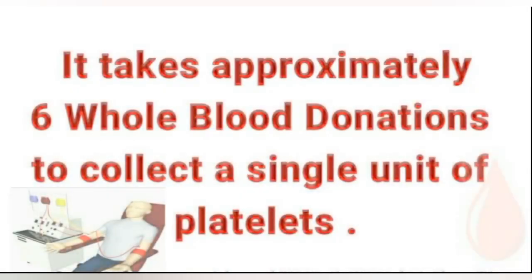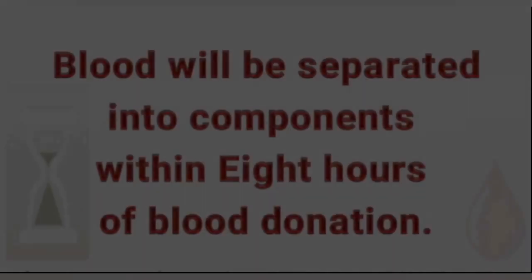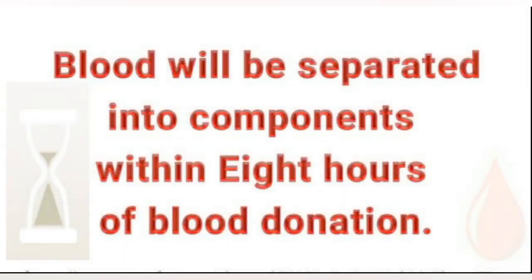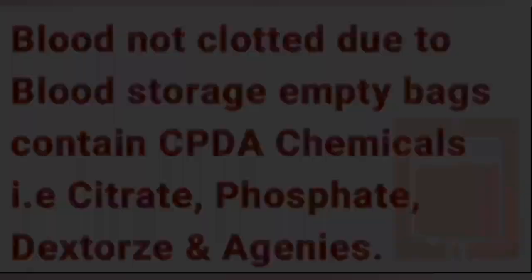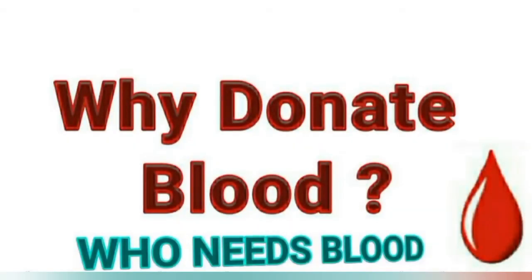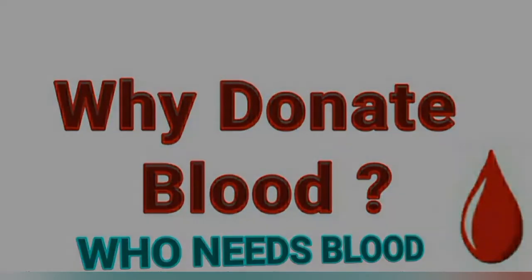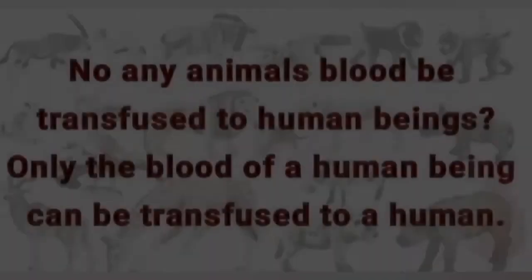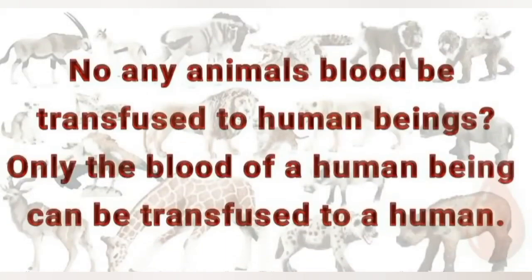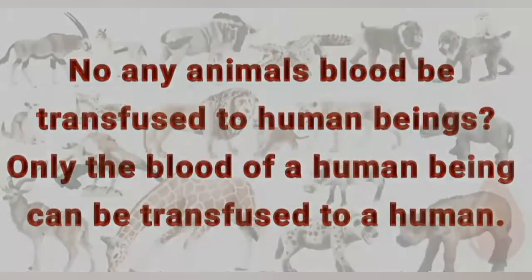It takes approximately 6 whole blood donations to collect a single unit of platelets. Blood will be separated into components within 8 hours of blood donation. Blood does not clot during storage due to CPDA chemicals — citrate, phosphate, dextrose — in the empty bags. There is no artificial production or substitute for human blood. No animal's blood can be transfused to human beings; only the blood of a human being can be transfused to a human.